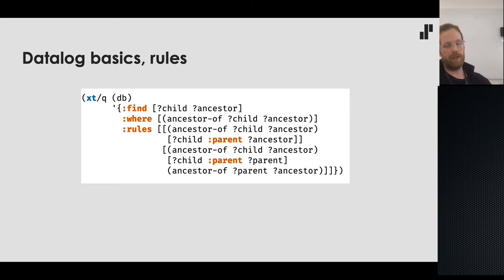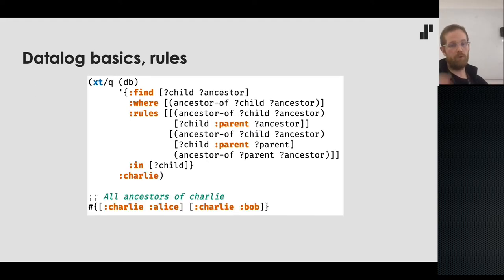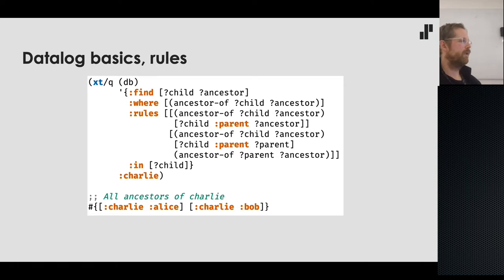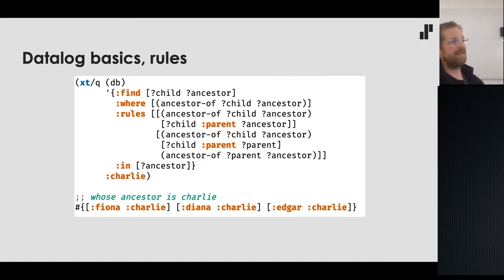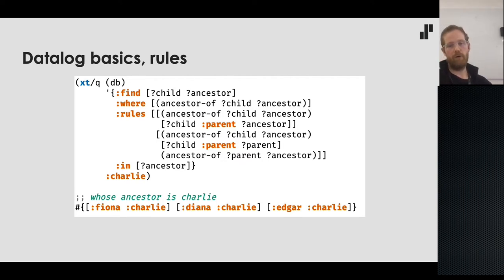This is all you need for a recursive query. Running it against the data yields 15 results — all children with all their ancestors satisfy this. But we can also bind the child to ask 'who are all the ancestors of Charlie?' — getting Bob and Alice. Or we can leave the child unknown and bind the ancestor to ask 'whose ancestor is Charlie?' These are very reusable because we don't decide what to bind beforehand.